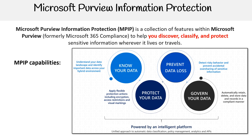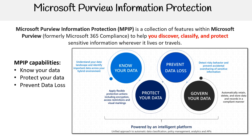We have a diagram with four specific domains that are information protection capabilities around our data. The first is Know Your Data, the second is Protect Your Data, the third is Prevent Data Loss, and the fourth is Govern Your Data. We'll be going over all these sections in the next few slides.